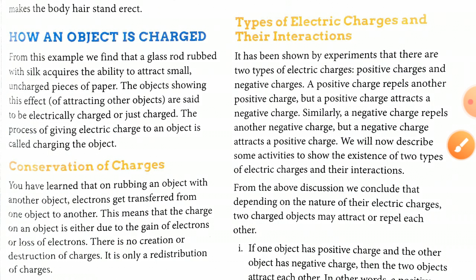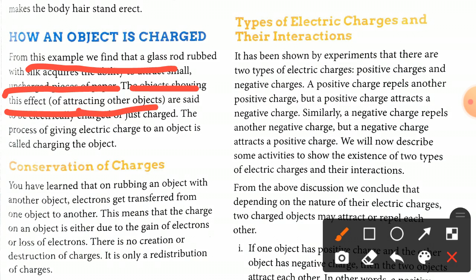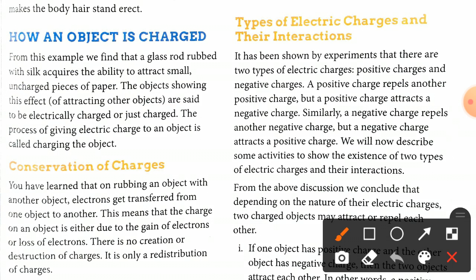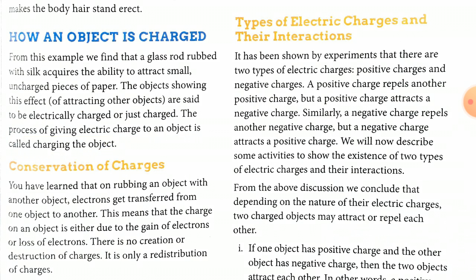From this example we find that a glass rod rubbed with silk acquires the ability to attract small uncharged pieces of paper. Objects showing this effect of attracting other objects are said to be electrically charged, or just charged. The process of giving electric charge to an object is called charging the object.